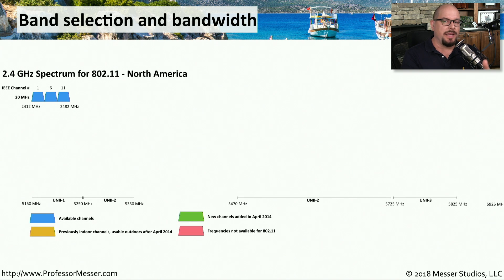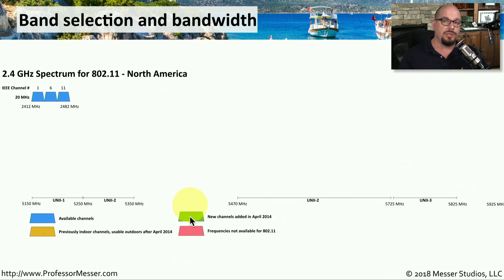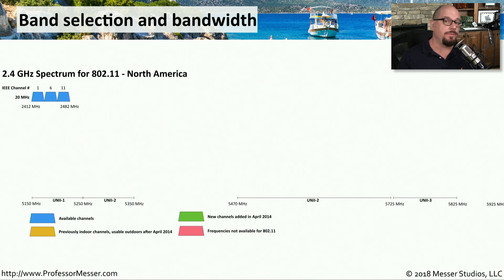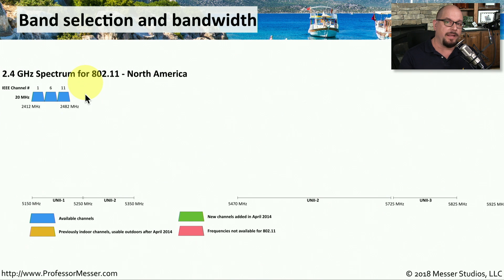Let's visually see what this looks like for the 2.4 gigahertz range and the 5 gigahertz range. All of the colors shown here that are blue, gold, and green are channels available to use in these frequencies. If you see the red color, those frequencies are not available for 802.11 networking. For 2.4 gigahertz, we have three 20 megahertz blocks available: channel 1, channel 6, and channel 11. That's the only spectrum available in the 2.4 gigahertz range.